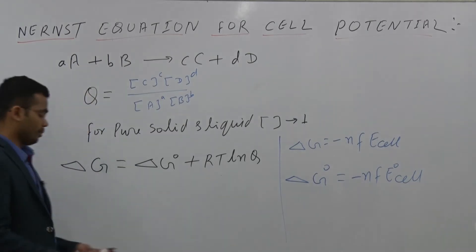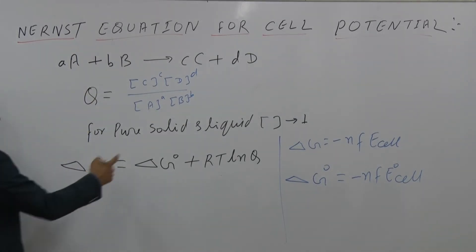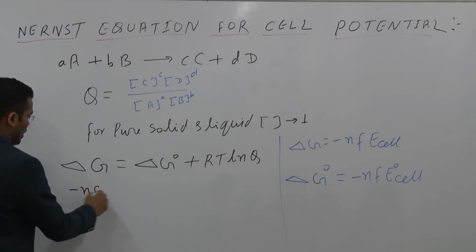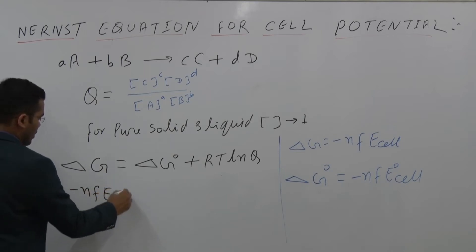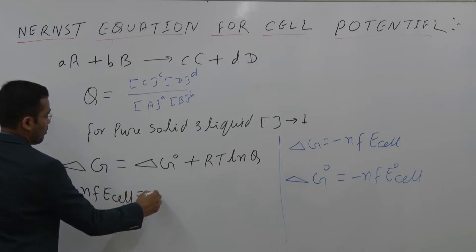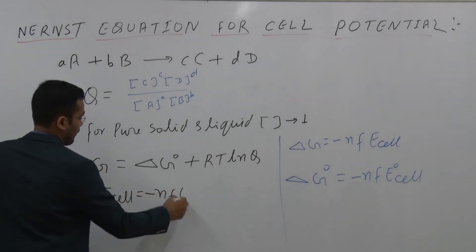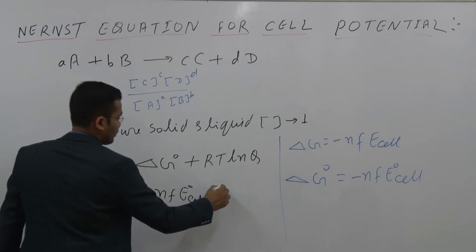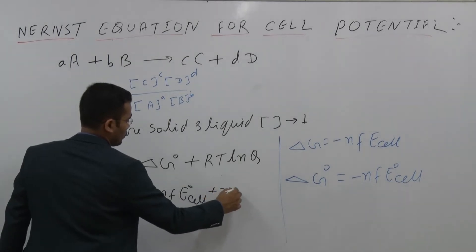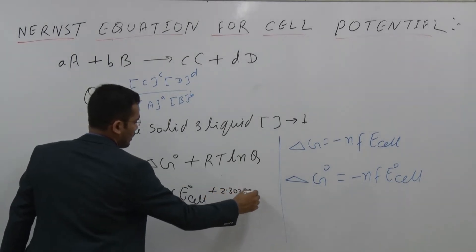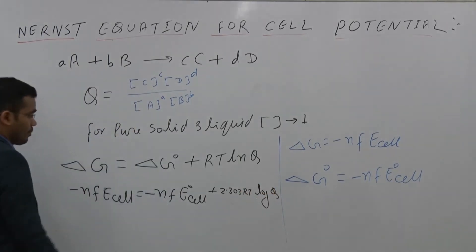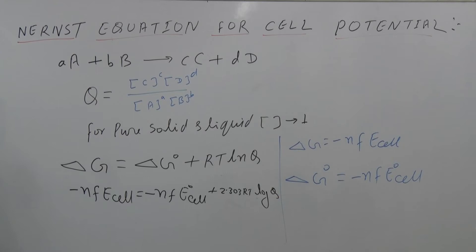Substituting these values: -nFE_cell = -nFE°_cell + 2.303 RT log Q. So this gives us plus 2.303 RT log Q.